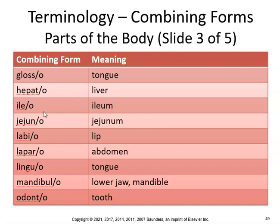Ilio — what about the iliocecal sphincter or the iliocecal valve? Jejunum — what about a gastrojejunostomy? Think about that. Ostomy is new opening, so now you're between the gastro and jejunum, making a new opening between the stomach and the jejunum.